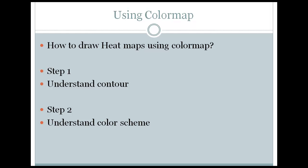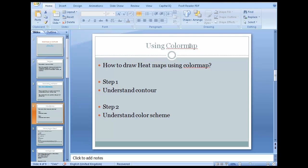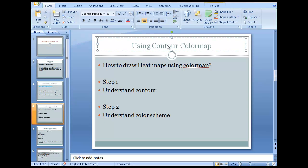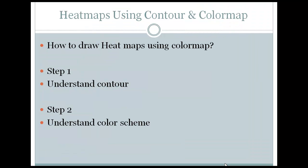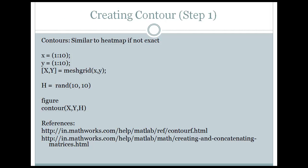To create the heat map, we would be using two things. First, we would be using contours, and then we would be using the color map. So we need to understand how contours work, look at a sample code, and also understand how to convert our code into the contour. Then we need to understand the color schemes that heat map has.